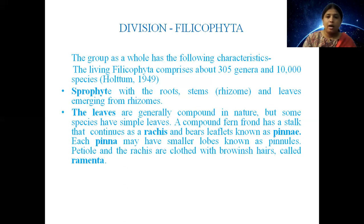There is a stalk called a petiole, and the petiole is continued in the rachis and the leaflets. There are leaflets which we call pinnae. Each pinna is divided into smaller pinnules. The rachis and petiole bear brownish-colored hairs which we call ramenta.